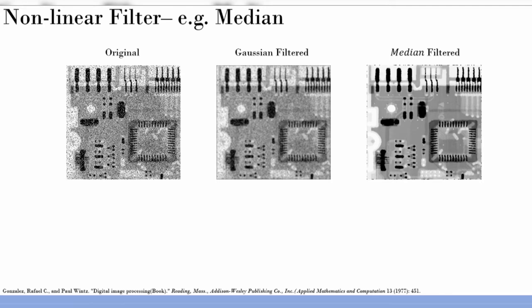Salt and pepper noise has only black and white values — it perturbs the entire image. If you take the histogram, you'll see it dominated at two particular values rather than a smooth Gaussian distribution. In such a scenario, applying Gaussian filtering can remove some noise, but it also smooths the image and loses edges — not a very convincing result.